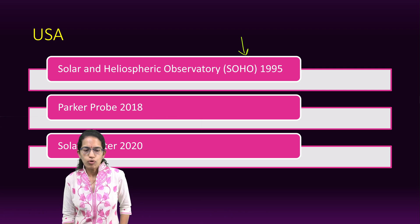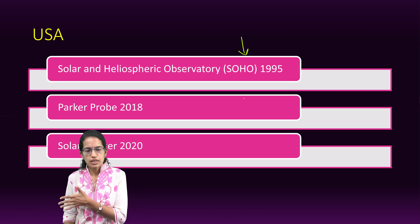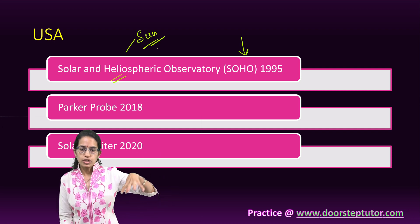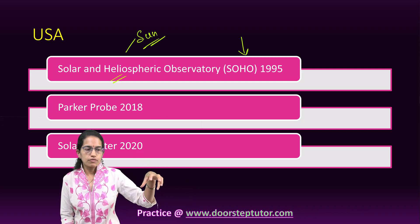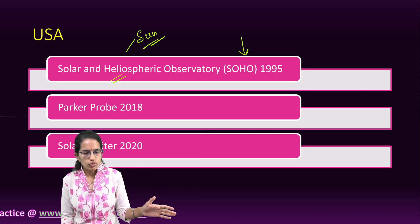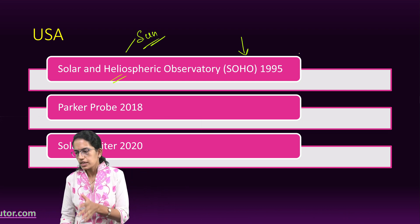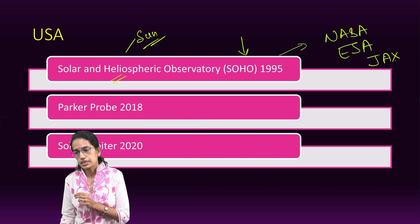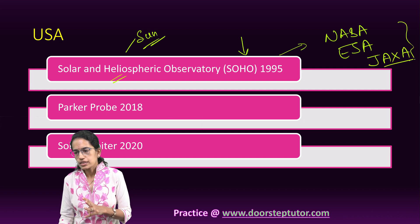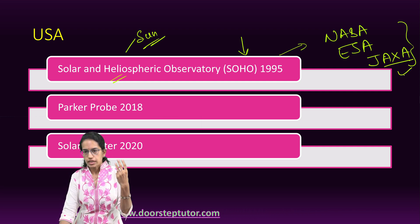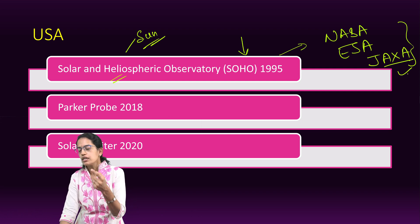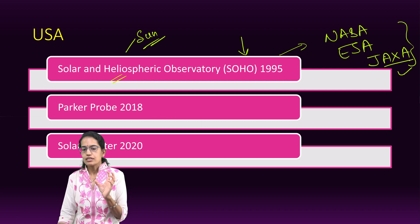The first major solar mission we would talk about is SOHO — the Solar and Heliospheric Observatory. Helio again means sun. SOHO was released in 1995 and was a joint mission of NASA, the European Space Agency, and the Japanese Space Agency, JAXA. Together these three worked on the sun's atmosphere, the interior of the sun, and discoveries on the solar cycle, coronal mass ejection, and coronal holes — those were the key ideas under SOHO.